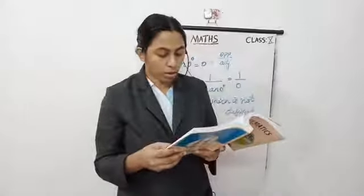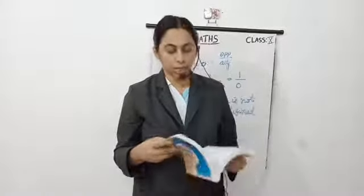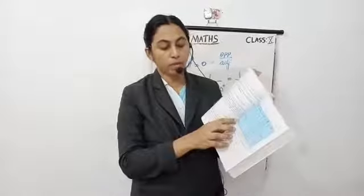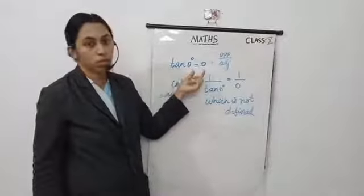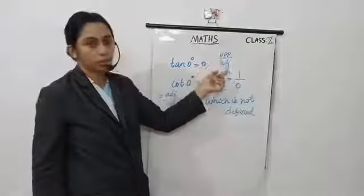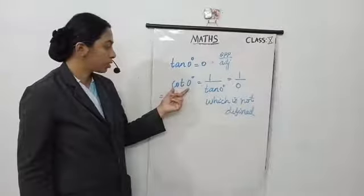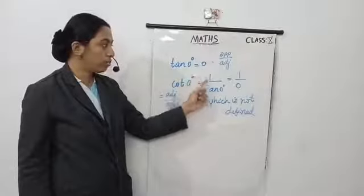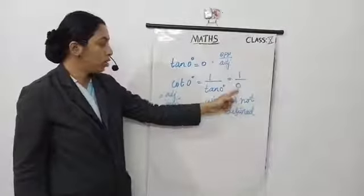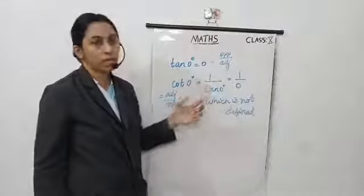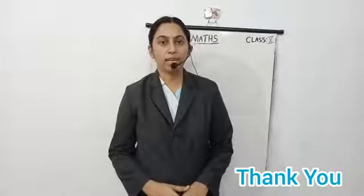Sub-question 5: cot A is not defined for A = 0°. That is a correct statement. In the table, cot A is not defined at 0°. Tan 0° = 0, and cot means adjacent by opposite, so cot = 1 by tan. Cot 0° = 1 by tan 0° = 1 by 0, which is not defined. So the given statement is true. This exercise is now completed. Write these questions in your notebook and study well. Thank you.